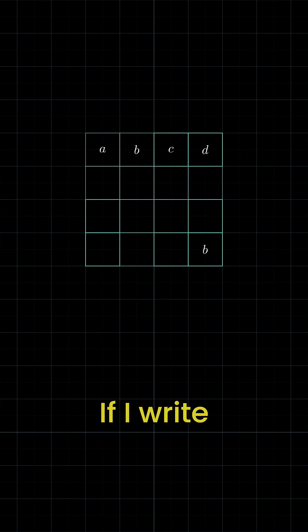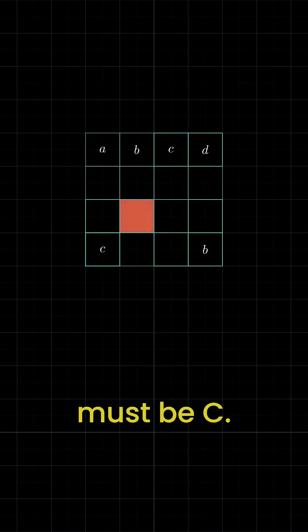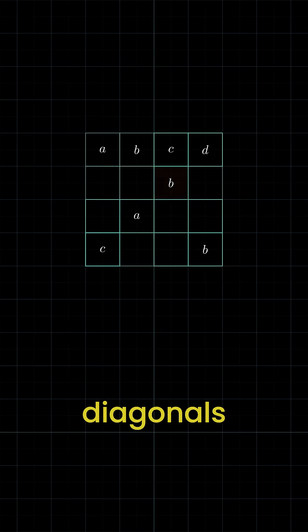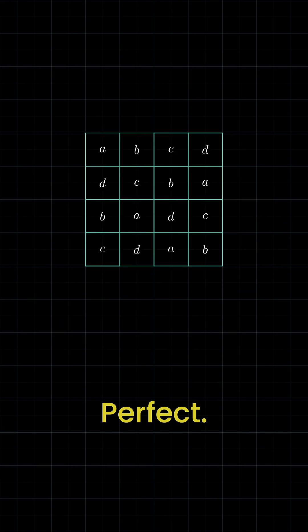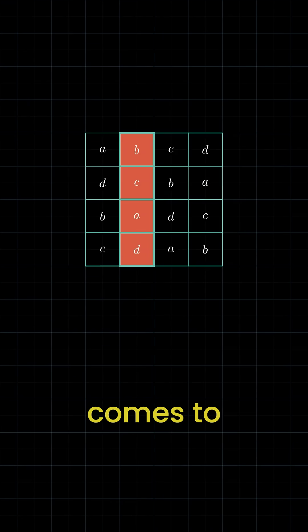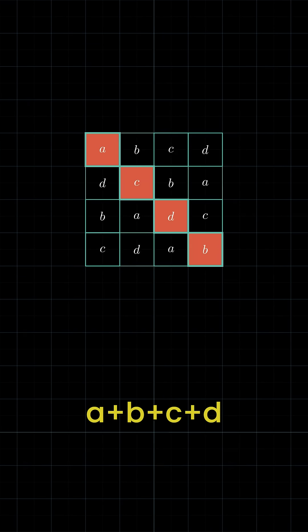Let's start with this corner. If I write B here, then the opposite corner must be C. Now let's fill in the diagonals, then the center square. Perfect. At this stage, everything sums to A plus B plus C plus D.